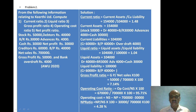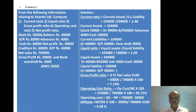Operating ratio formula: operating cost divided by net sales into 100. Operating cost = net sales minus net profit = Rs. 7,00,000 minus Rs. 30,000 = Rs. 6,70,000. Applying the formula: Rs. 6,70,000 divided by Rs. 7,00,000 into 100 = 95.71% is the operating cost ratio.